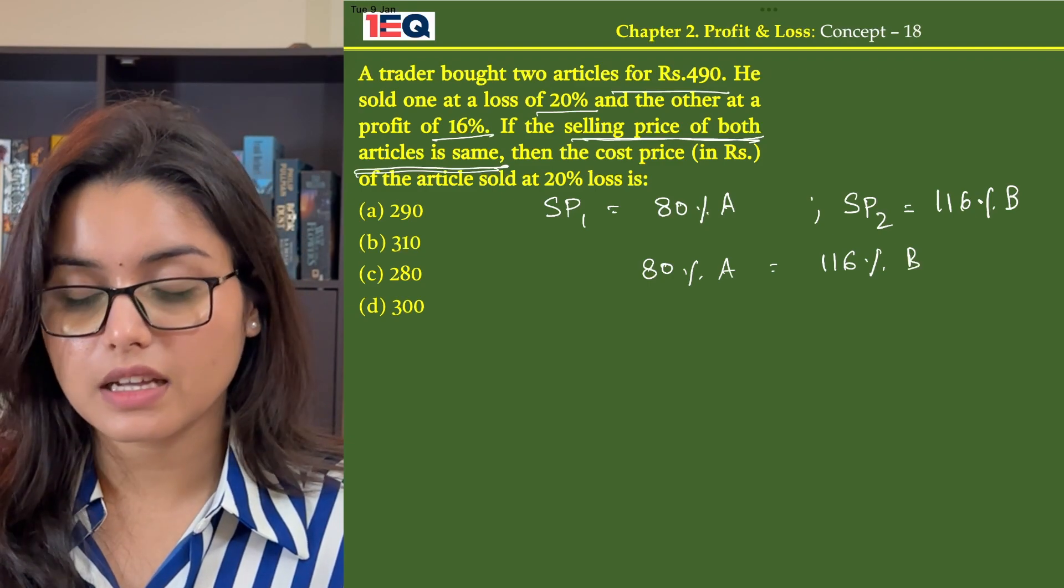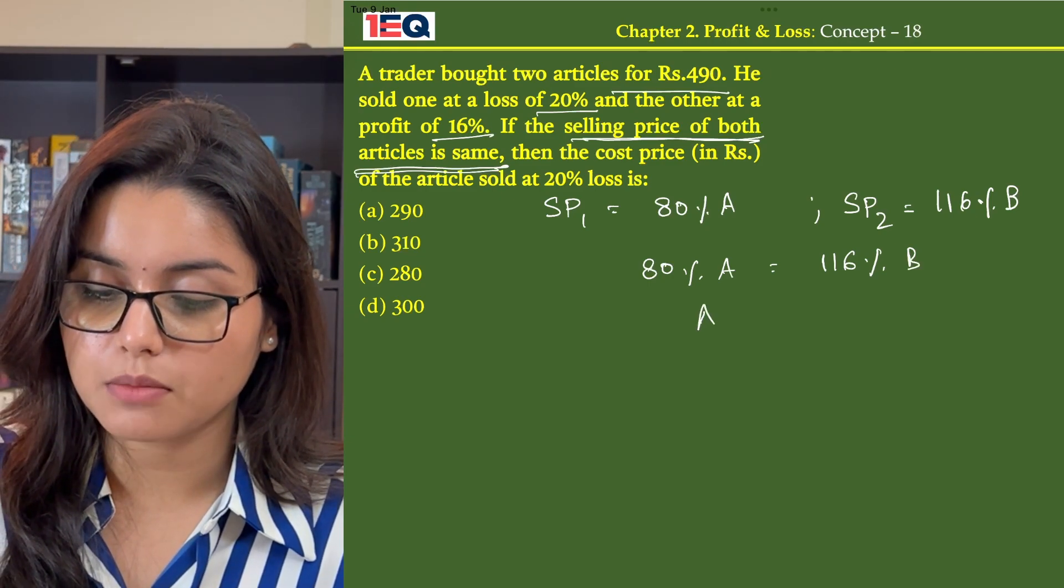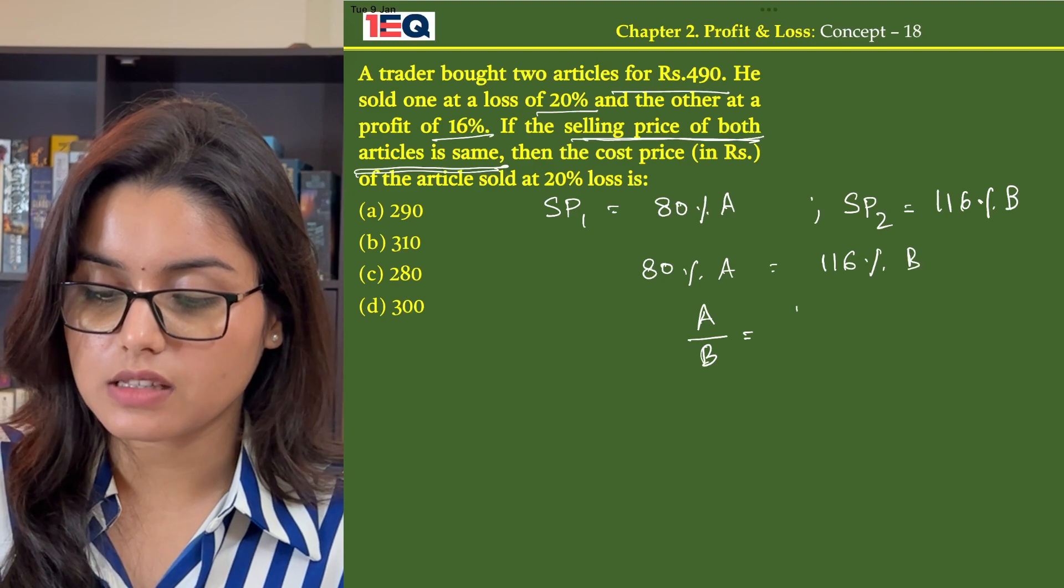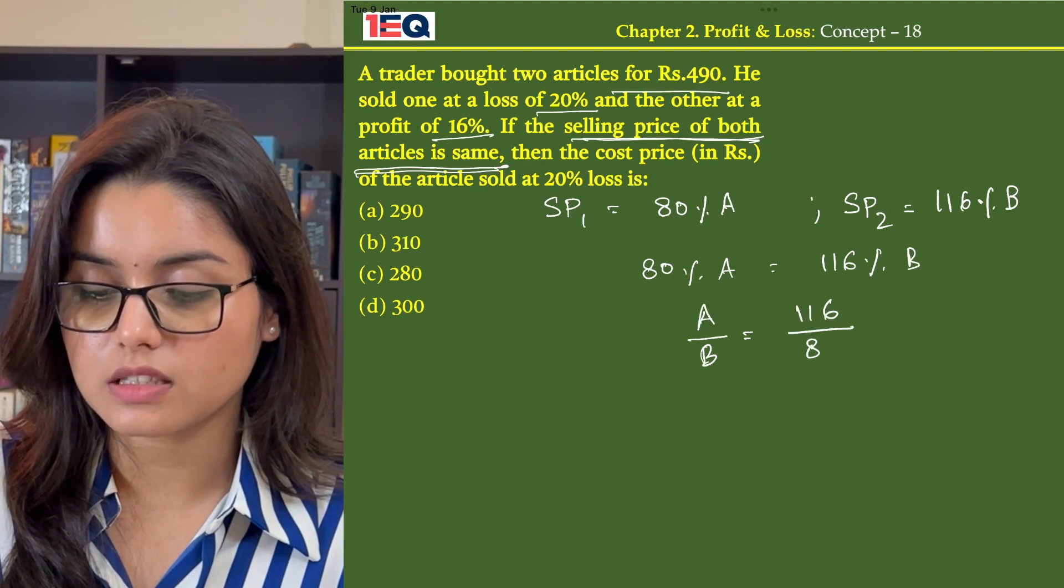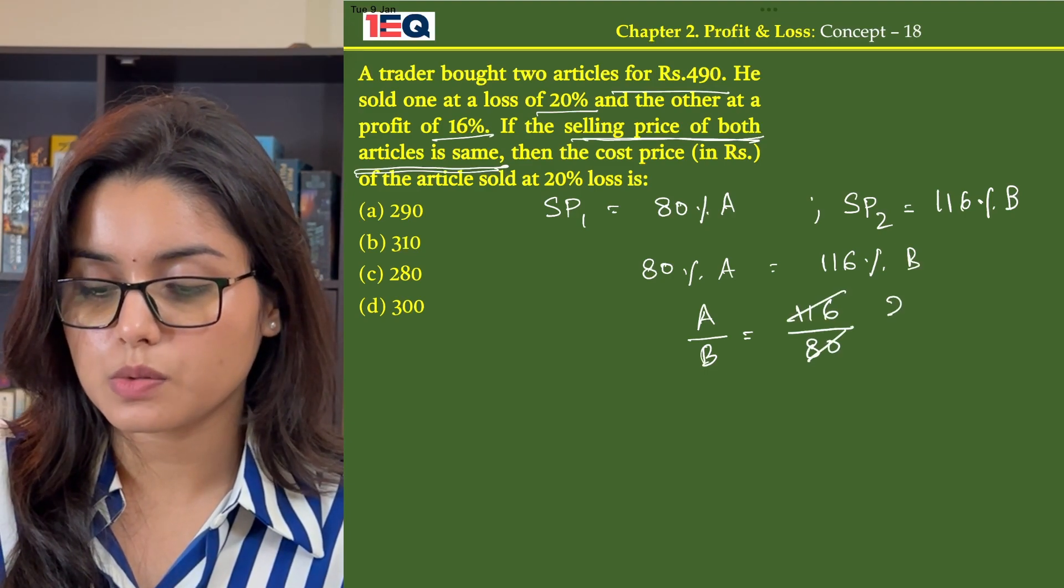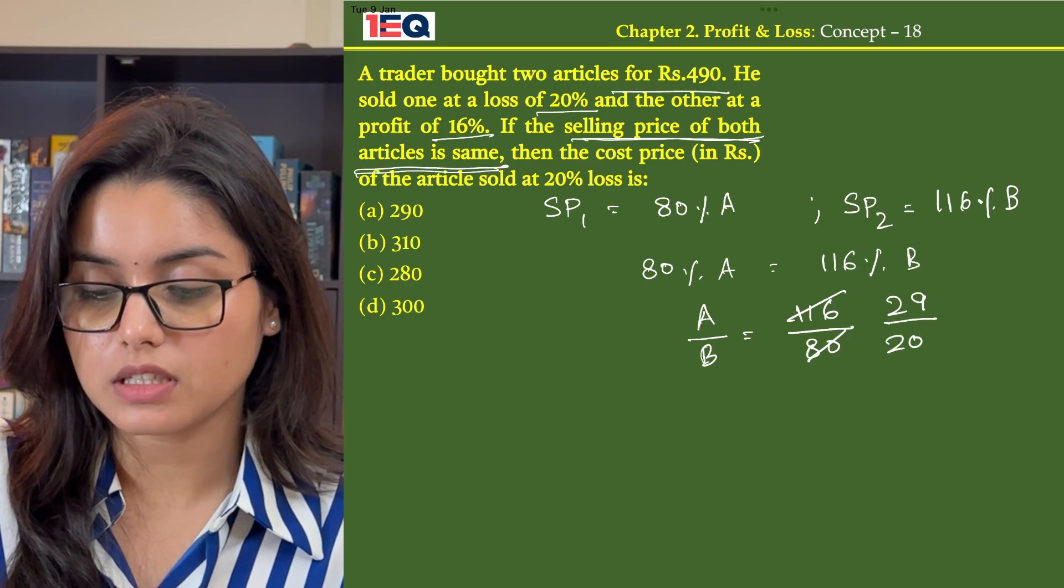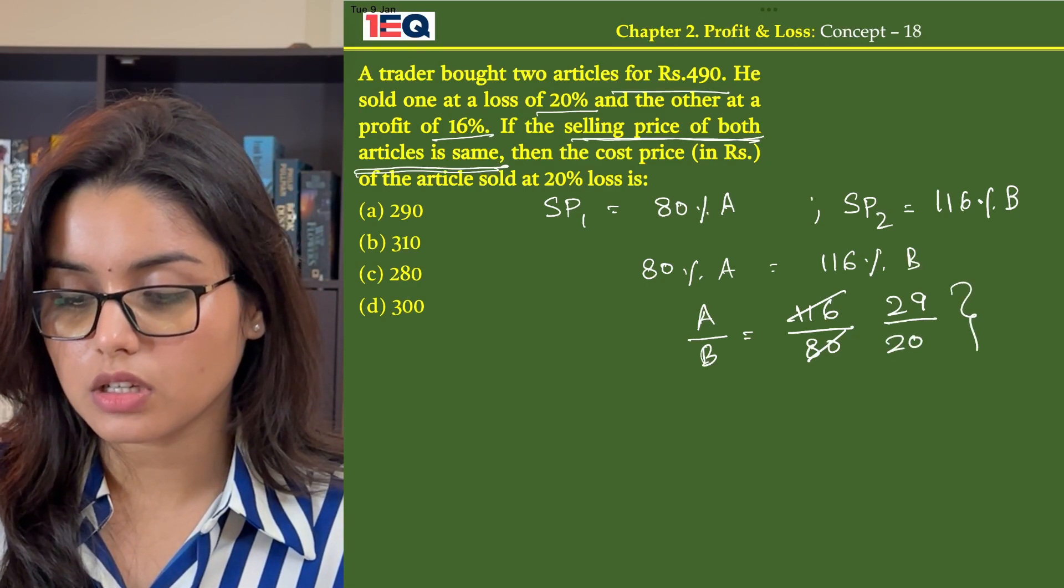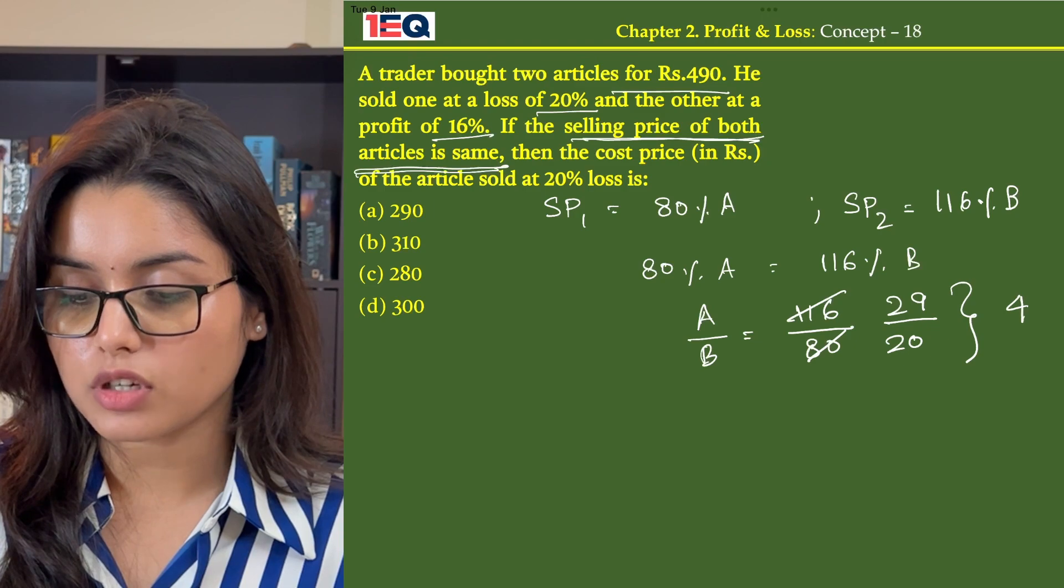The percentage signs get cut off. So A by B gives us 116 by 80 which is 29 by 20. Now the total here is 49.